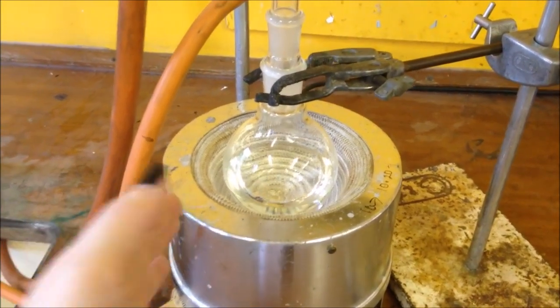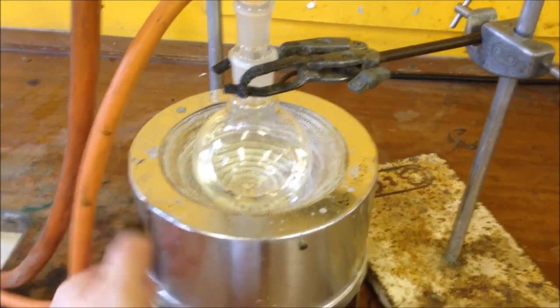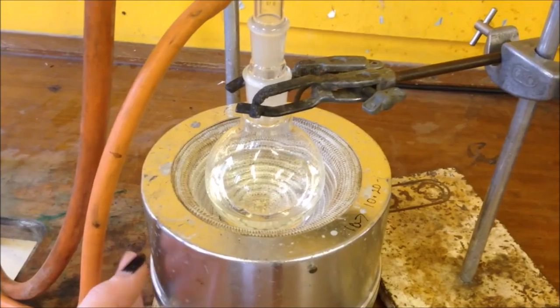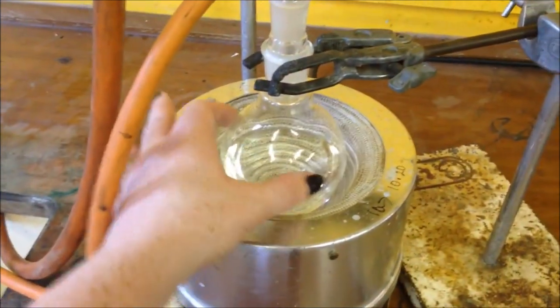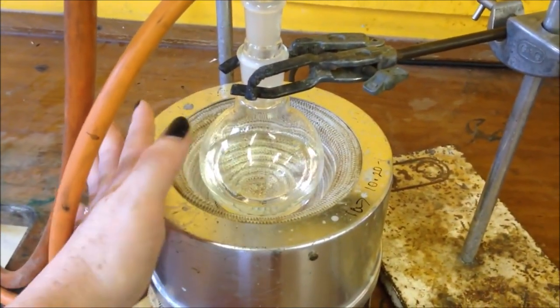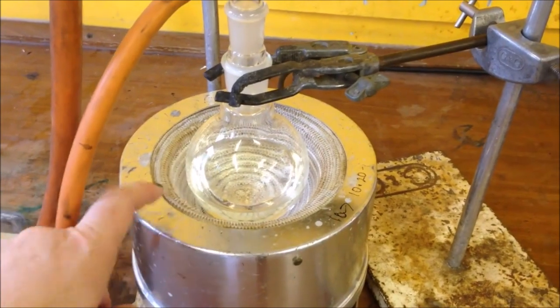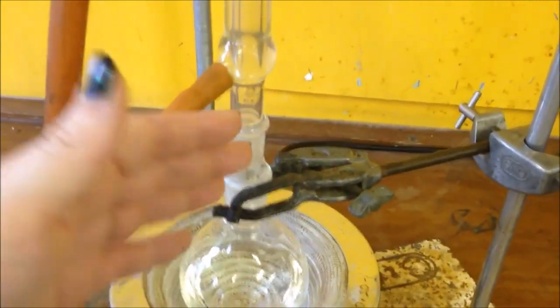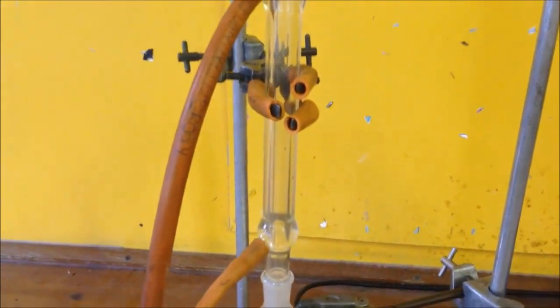After mixing all of those things I've set it up to reflux. Here I have my mantle. You could use a Bunsen burner or a water bath if you don't have one of these available. Here's my round bottom flask. This is just sitting ever so slightly above the basket here, so it's not sitting on it. I've got my connector and I've got my reflux condenser here.